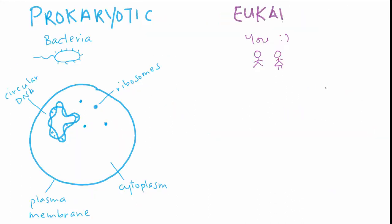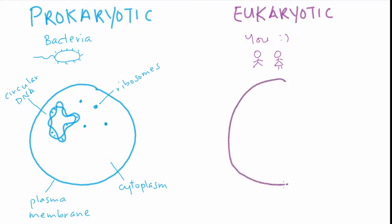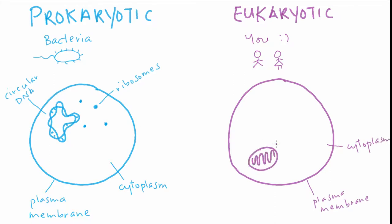These more complex cells are called eukaryotic cells. They contain several membrane-bound organelles which perform specialised functions. Some but not all of these organelles arose through endosymbiosis. For example the mitochondria has two membranes which indicates that it was formed through an endosymbiotic event.